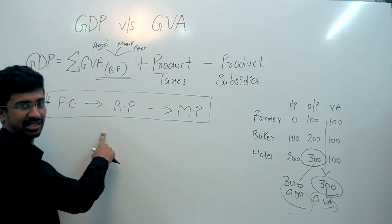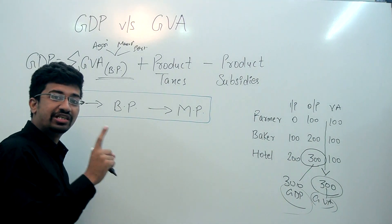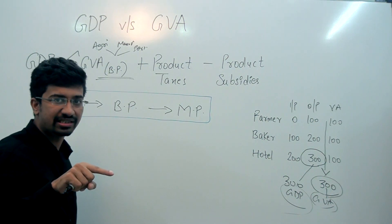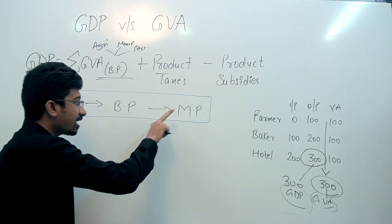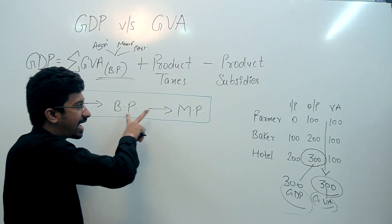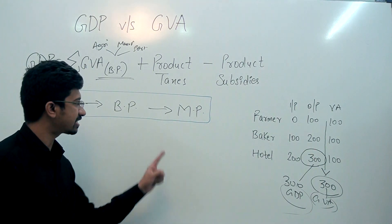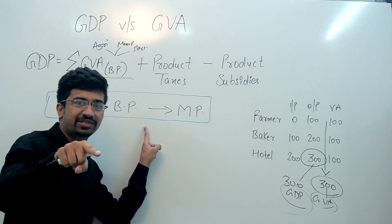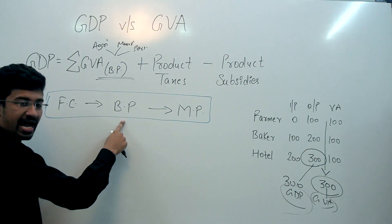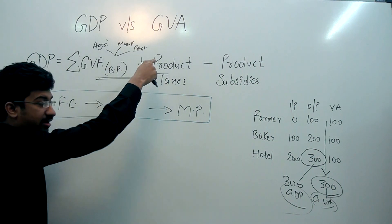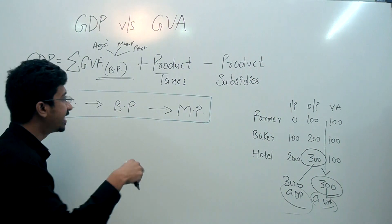GDP जो है वह value of all final goods and services है, और final goods की value market price पर measure होती है। Basic price से market price पे जाने के लिए, जैसा last lecture में discuss किया था — product taxes add करते हैं और product subsidies subtract करते हैं। इसीलिए: GVA at basic prices + product taxes − product subsidies = GDP.